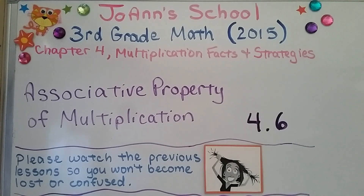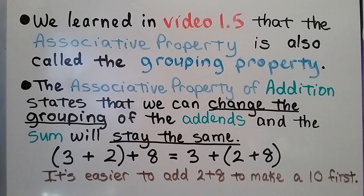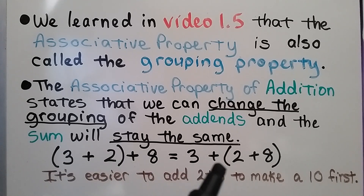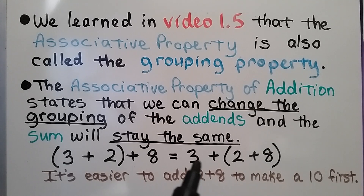Lesson 4.6: Associative Property of Multiplication. We learned in video 1.5 that the associative property is also called the grouping property. The associative property of addition states that we can change the grouping of the addends and the sum will stay the same. We can add 3 plus 2 and then add 8, or add 2 plus 8 and then add 3. It's actually easier to add 2 plus 8 to make a ten first, and then add the three.